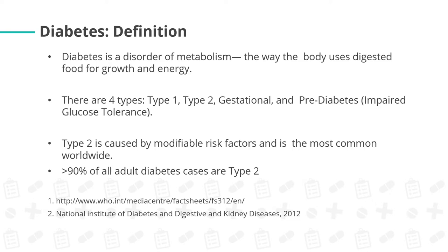Type 2 diabetes is adult onset — the cells cannot take up glucose as food or energy, resulting in increased blood glucose levels. Next is gestational diabetes, which occurs during pregnancy, and prediabetes or impaired glucose tolerance. Type 2 is caused by modifiable risk factors and is the most common worldwide — greater than 90% of all adult diabetes cases are type 2.